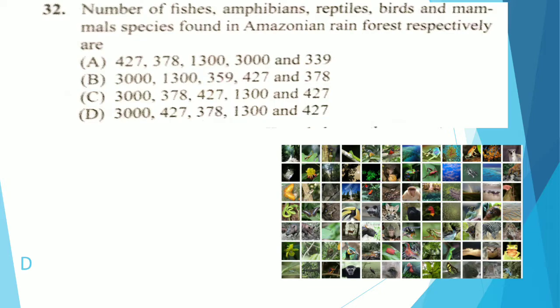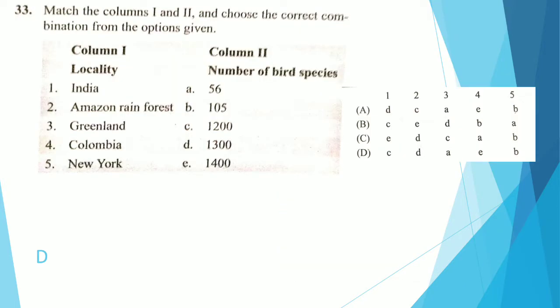The number of fish, amphibians, reptiles, birds, and mammals found in the Amazon rainforest respectively are: fish 3,000; amphibians 427; reptiles 378; birds 1,300; mammals 427 — answer is D. In the match-the-column question for bird species: India has 1,200; Amazon rainforest has 1,400; Greenland has 56; Colombia has 1,400; New York has 105 — answer is D.